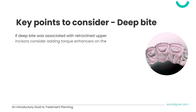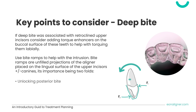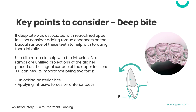When there is a need to correct the inclination of retroclined upper incisors — to help with aesthetics and relative extrusion — consider using torque enhancers on the labial surfaces of these teeth to help torque them labially. Also consider bite ramps: these are unfilled projections of the aligner placed on the lingual surface of the upper incisors, and canines if possible. They work on deep bite by unlocking the posterior bite, removing bite forces if present, giving room for passive extrusion through over-eruption to open the bite anteriorly, and applying intrusive forces on anterior teeth.